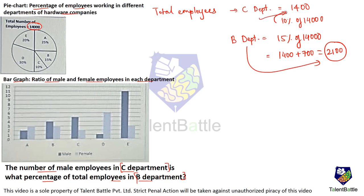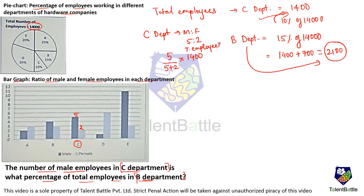Now we need male employees of C department. In the C department, checking the bar graph, the ratio of males to females is 5:2. So the total number of male employees is 5/(5+2) multiplied by total employees of C department, which is 1,400. That gives us 5/7 × 1,400 = 1,000. So there are 1,000 male employees in C department.